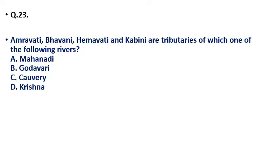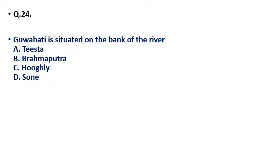Question 23: Amravati, Bhavani, Hemavati, and Kabini are tributaries of which river — (a) Mahanadi, (b) Godavari, (c) Kaveri, (d) Krishna? The correct answer is Kaveri. These rivers are all tributaries of the Kaveri, which originates from Karnataka and flows to Tamil Nadu, as discussed in the earlier question.